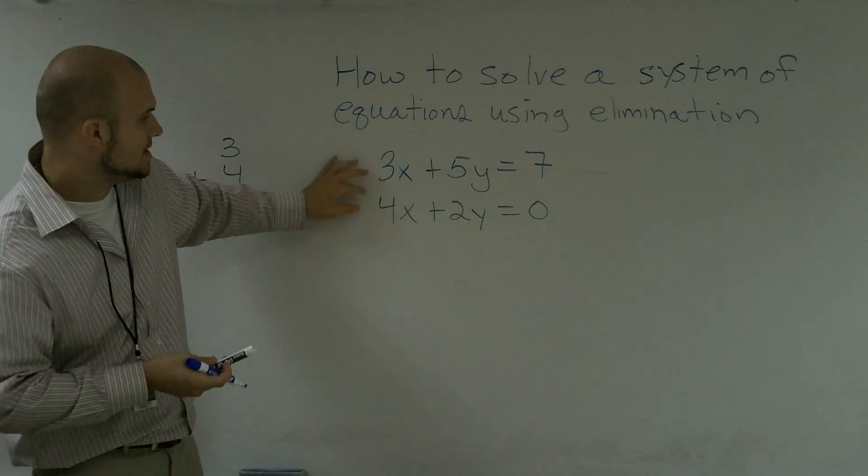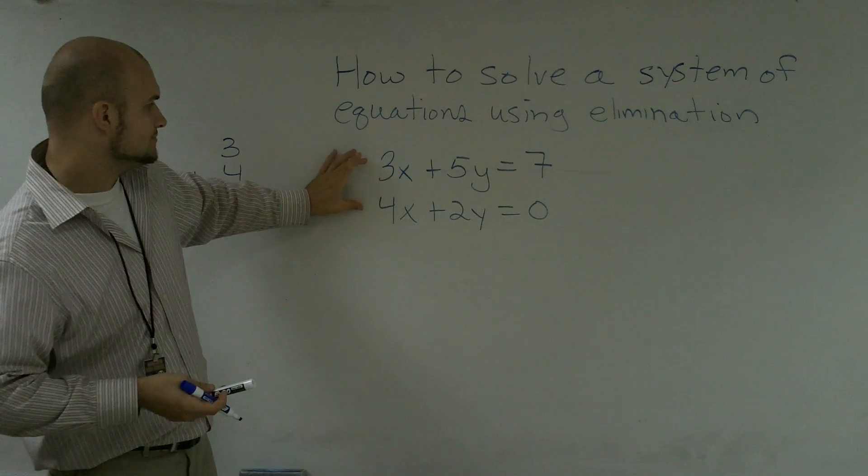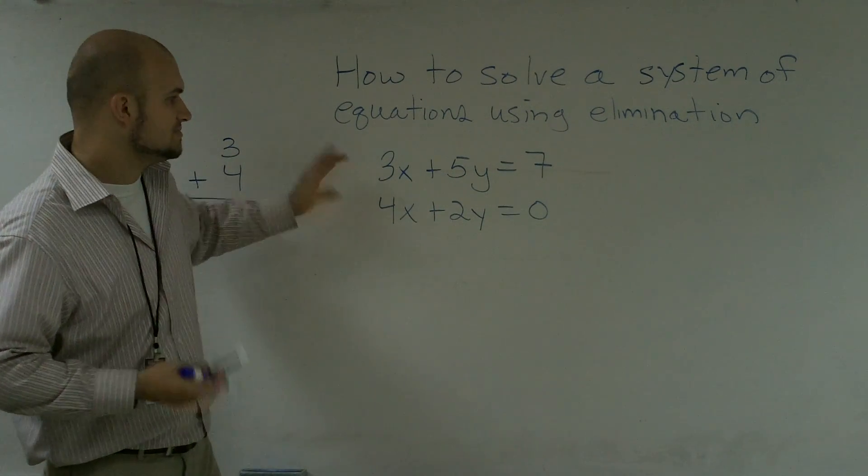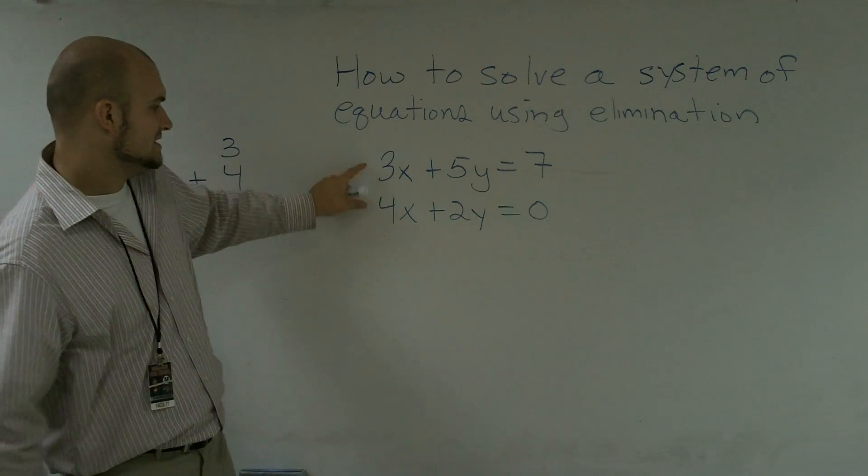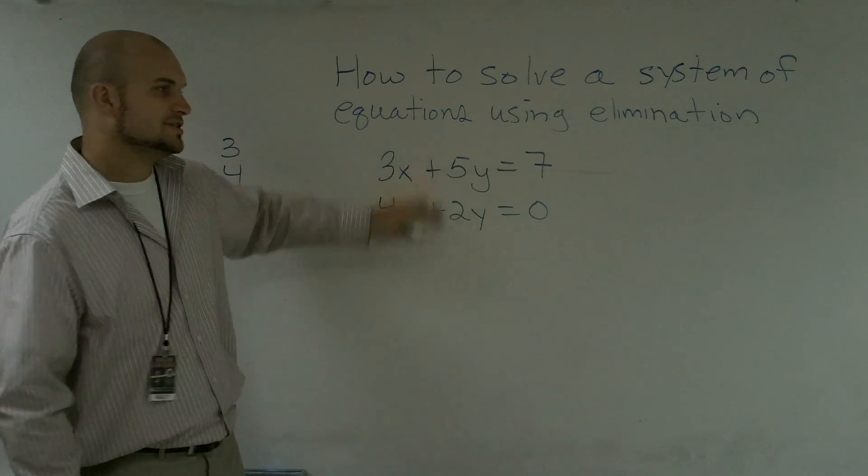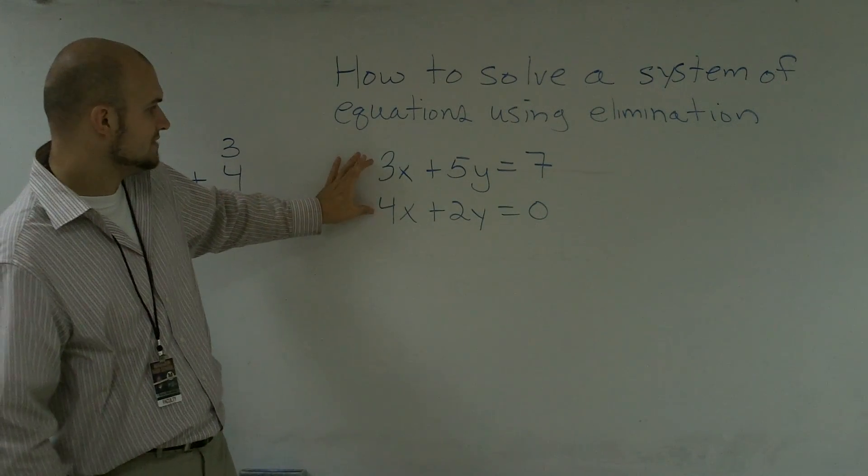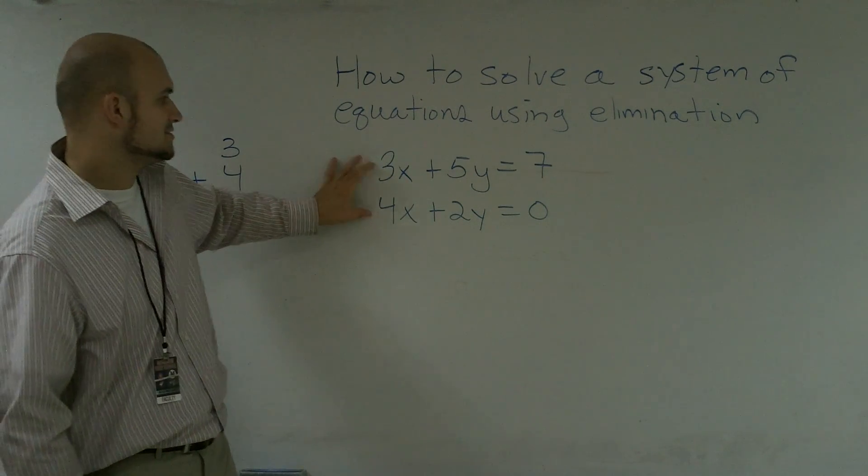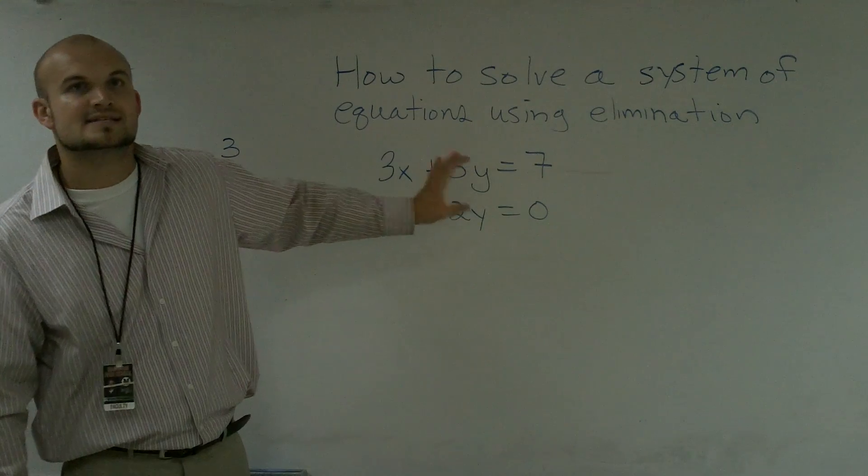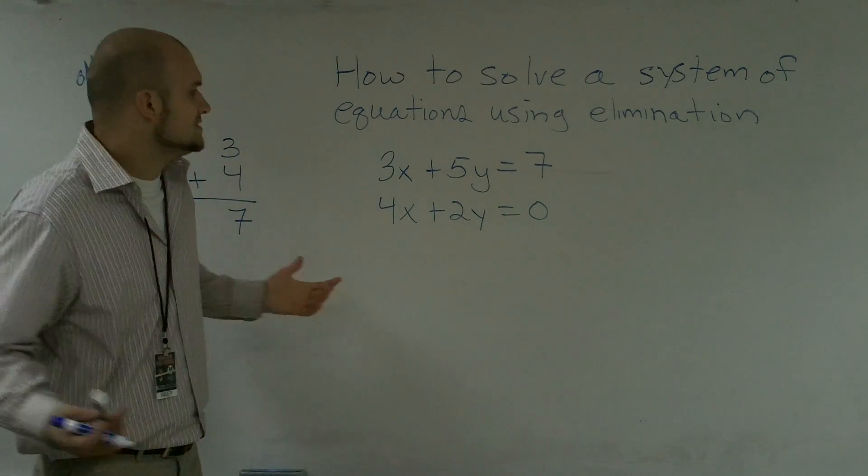So what I look at is I'm going to have to multiply both of these equations by a multiple because there's really no multiple that these two have in common that's one of these coefficients. So between 3 and 4, they both have in common 12. That's their least common multiple. And between 5 and 2, the least common multiple here is 10.